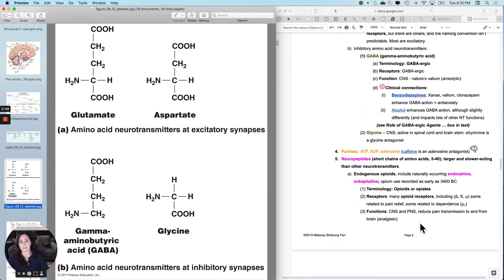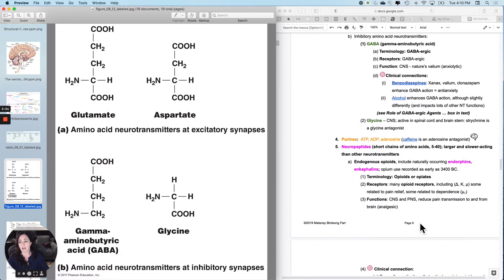Inhibitory amino acid neurotransmitters: GABA, this guy right here. I usually don't make you spell this one out. GABA is what everybody calls it. Gamma amino butyric acid. This is your chill out neurotransmitter.